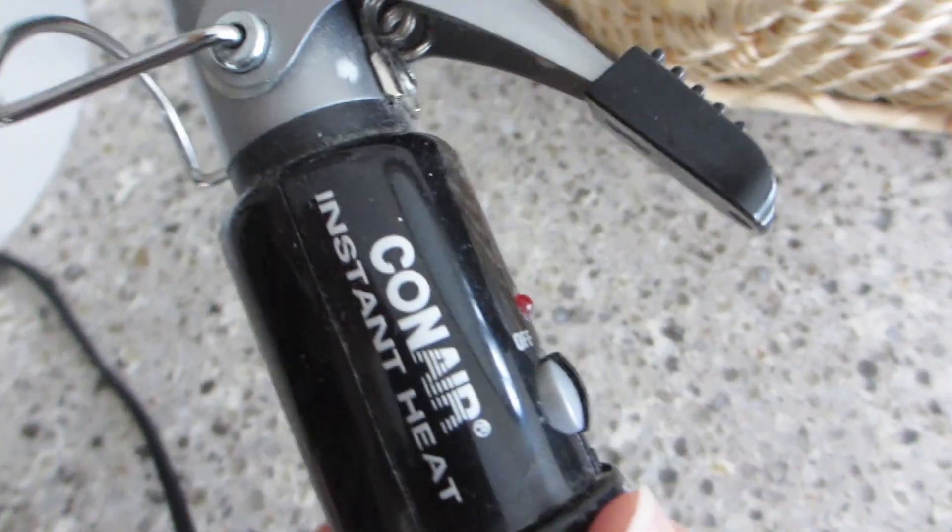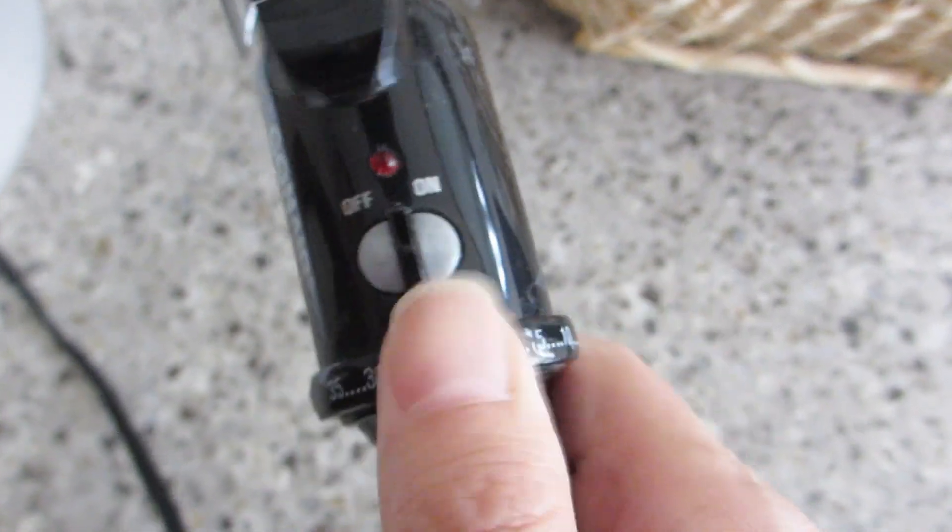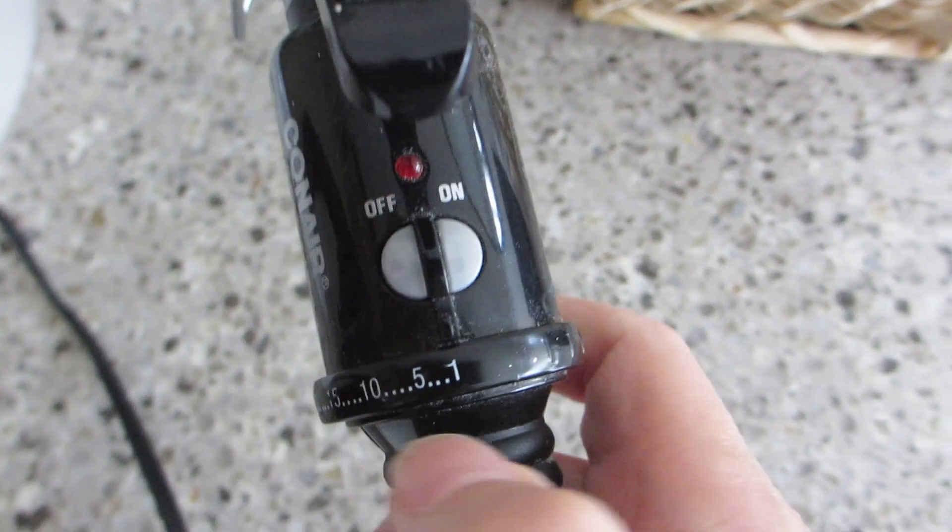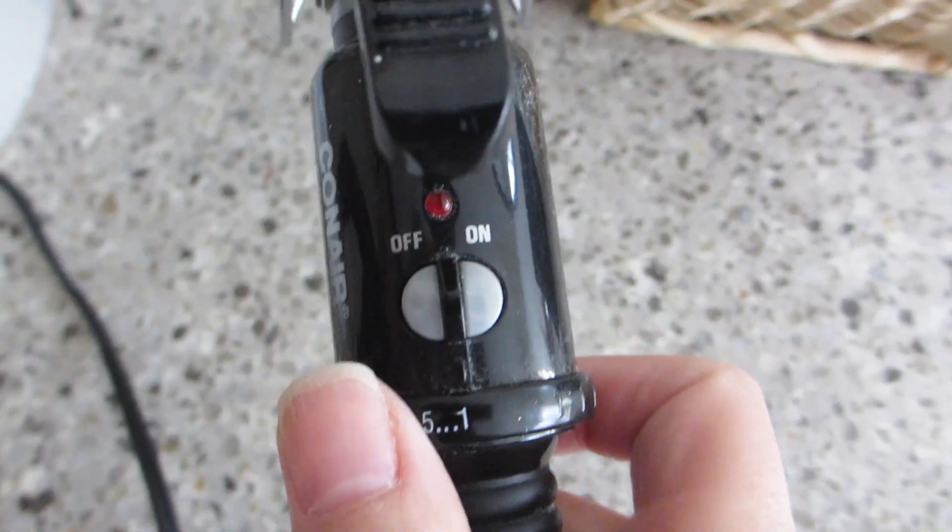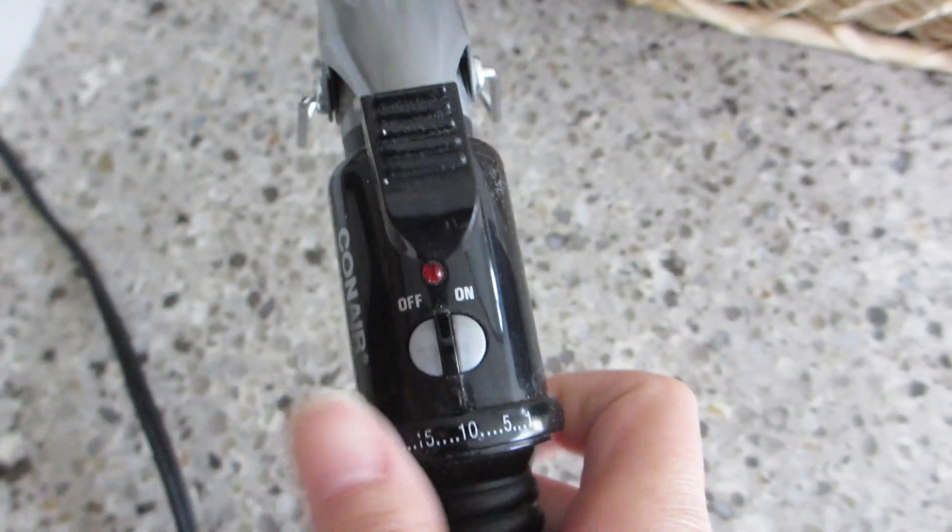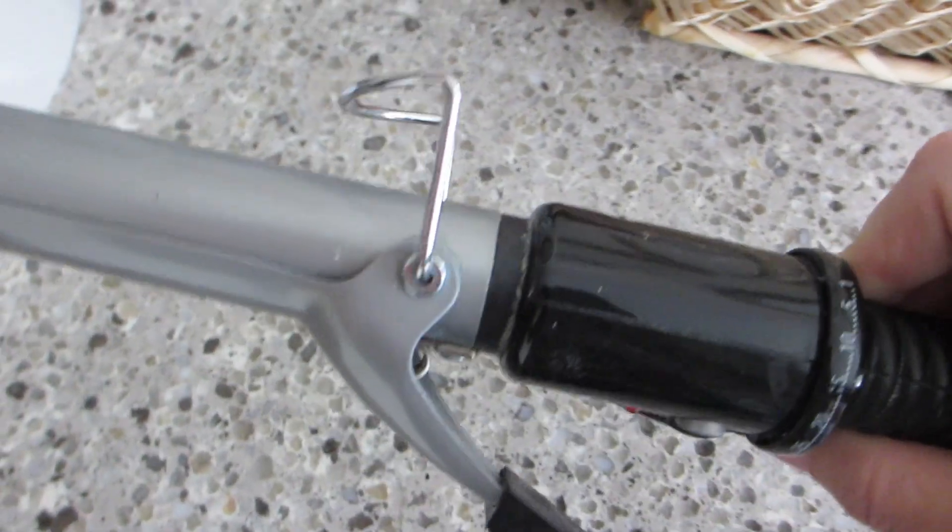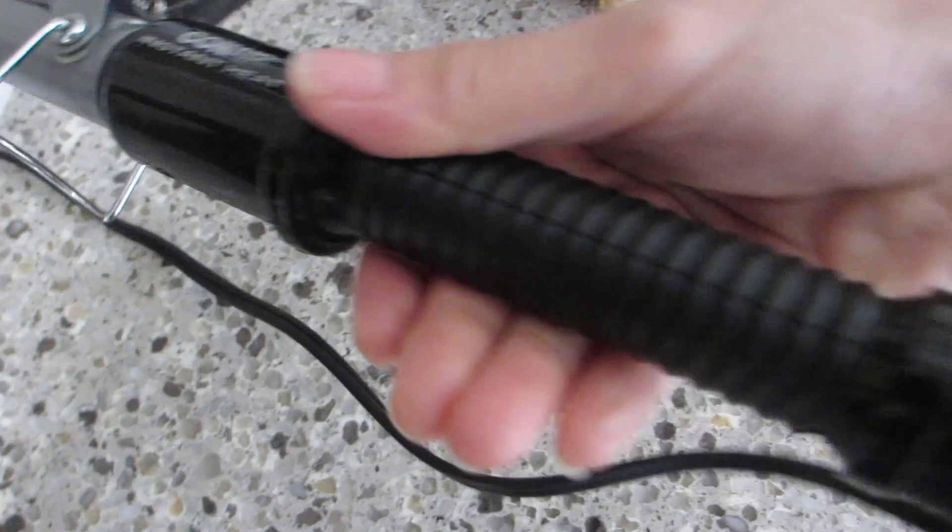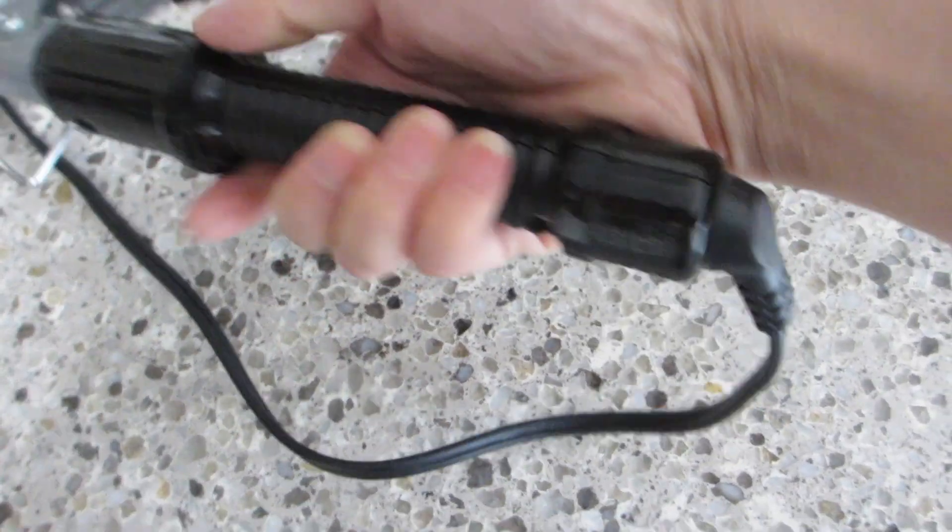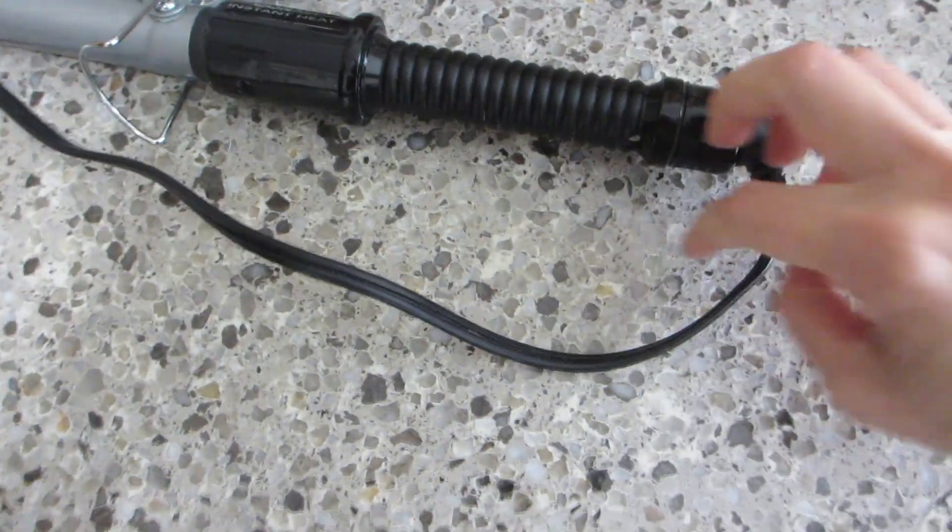Next, you have a conveniently placed dial that lets you adjust the heat intensity. This is especially important because we all have different hair types and those of you like me who have fine thin hair may want to keep your heat setting on the lower end, 8 or below. But if you have thicker or coarser hair, you may want to increase your heat setting closer to the 20s with a maximum level of 25.